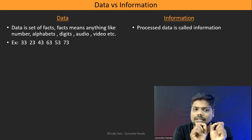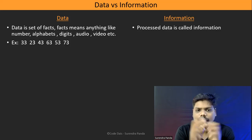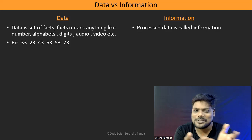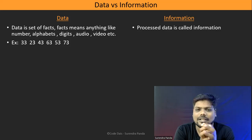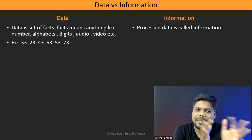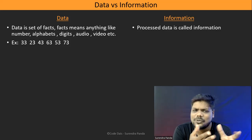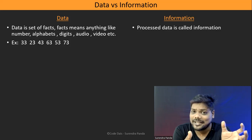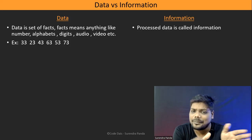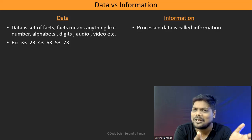Here I give you the numbers: 33, 23, 43, 63, 53, and 73. Can you tell me — is this data or information? Yes, of course, it is data. Because it falls under the definition of data — it's a random set of numbers. There is no arrangement, no proper order, no proper manner, so there is no meaning here. It is unordered.